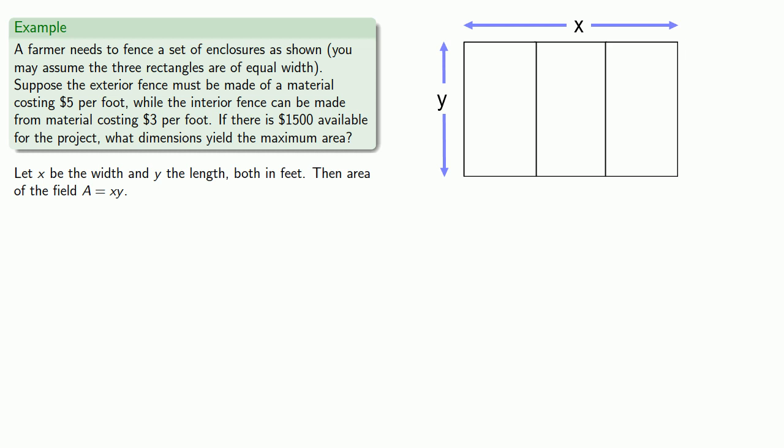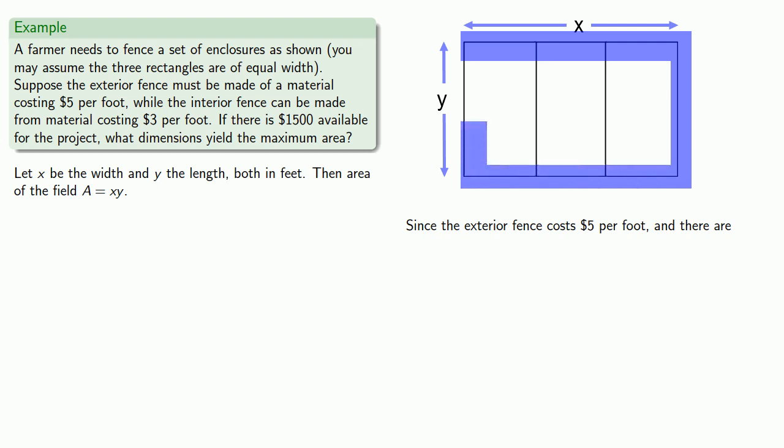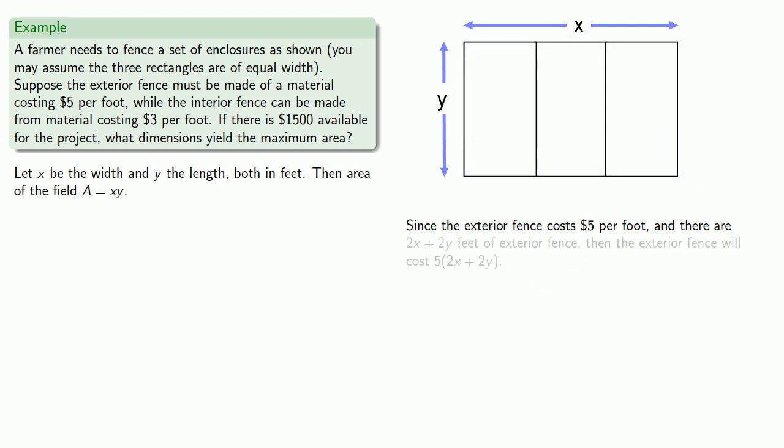We're also told that the exterior fence costs $5 per foot, so we might want to find the amount of exterior fencing. So we find there's going to be 2x plus 2y feet of exterior fence. Then our exterior fence will cost 5 times 2x plus 2y.